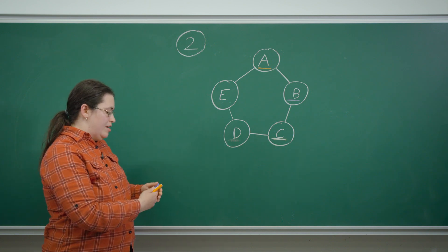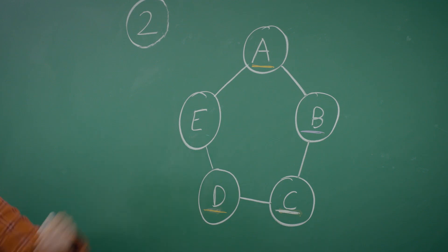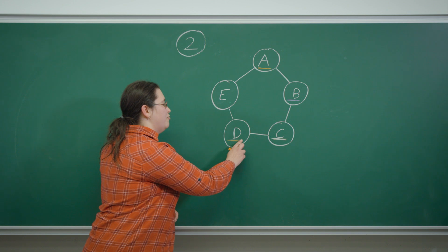However, if D is orange, I actually have two possibilities for E because it's adjacent to two orange circles, so it can be either purple or white. So this gives rise to two more possibilities.